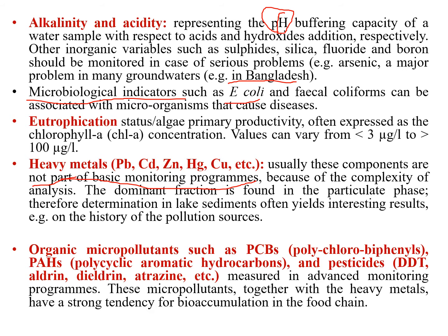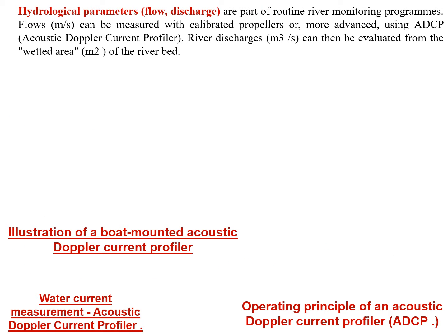Heavy metals are not part of the basic monitoring program due to the complexity of analysis; the dominant fraction is found in the particulate phase, so determination in lake sediments yields interesting historical results on pollution sources. Organic micropollutants such as PCBs (polychlorobiphenyls), PAHs (polycyclic aromatic hydrocarbons), and pesticides like DDT, aldrin, dieldrin, and atrazine are measured in advanced monitoring programs; these micropollutants together with heavy metals have a strong tendency for bioaccumulation in the food chain. Hydrological parameters — flow rate and discharge — are part of routine river monitoring and can be measured with a calibrated propeller or using ADCP (Acoustic Doppler Current Profiler), which evaluates values from the wetted cross-sectional area of the river.